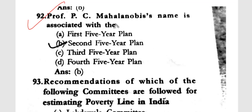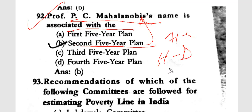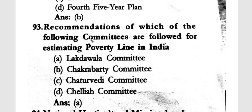Professor P.C. Mahalanobis's name is associated with the Second Five Year Plan. The First Five Year Plan is associated with the Harrod-Domar model. For estimating the poverty line in India, the recommendations of the Lakdawala Committee are followed.